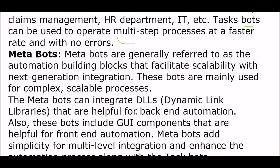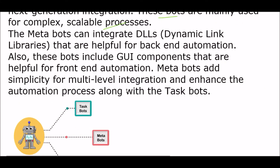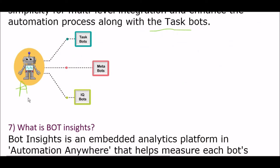The next bot type is Meta Bots — generally referred to as automation building blocks that facilitate scalability with next-generation integrations. Meta Bots are mainly used for complex scalable processes. They are integrated DLLs (Dynamic Link Libraries) helpful for back-end automation and also include UI components helpful for front-end automation. Meta Bots add simplicity for multi-level integrations and enhance the automation process along with Task Bots.